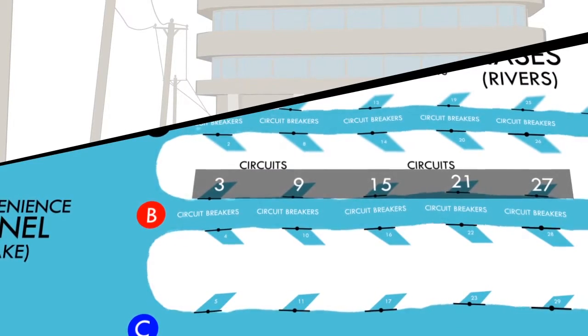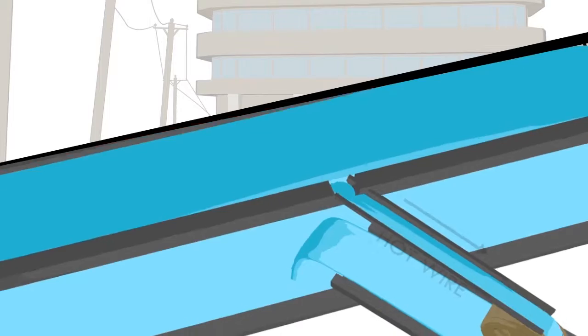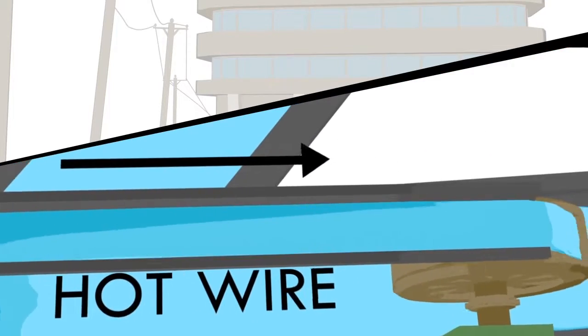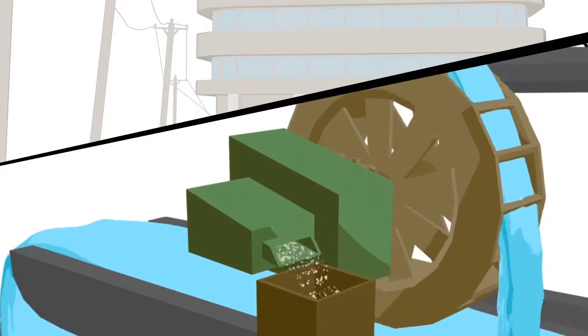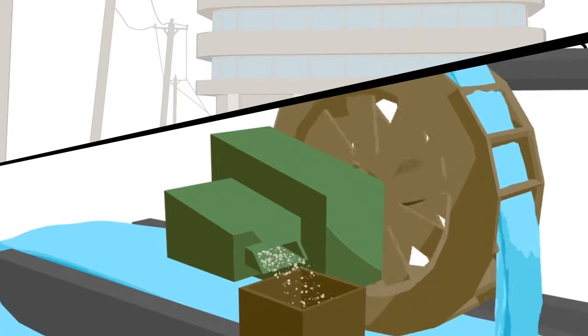It's at the circuit where the electricity, or in this case water, is put to work. Here we have an old-fashioned flour mill, happily crushing wheat into flour, just like you'd see in a regular office.